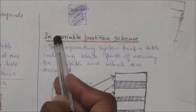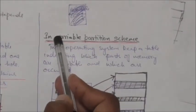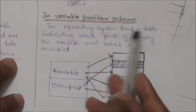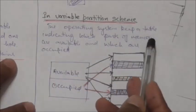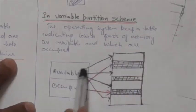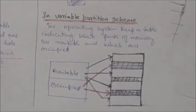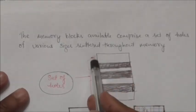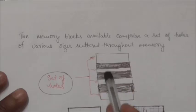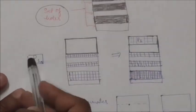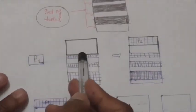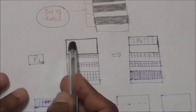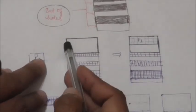When a variable partition scheme is implemented, the operating system keeps a table indicating which parts of memory are available and which are occupied. The memory blocks available comprise a set of holes of various sizes scattered throughout the main memory. When a new process arrives and needs memory, the system searches the set of holes for a hole that is large enough for that process.